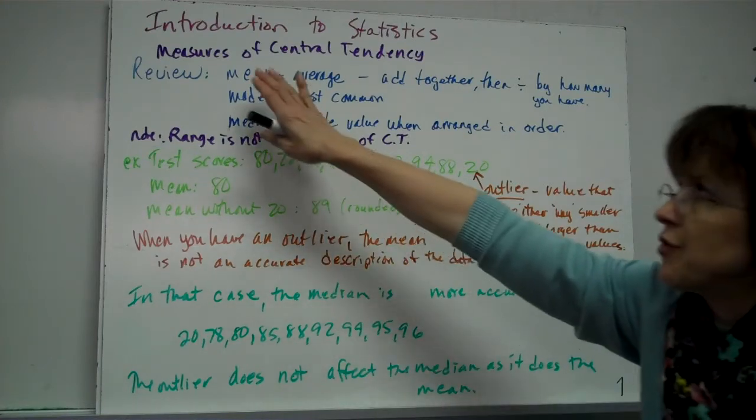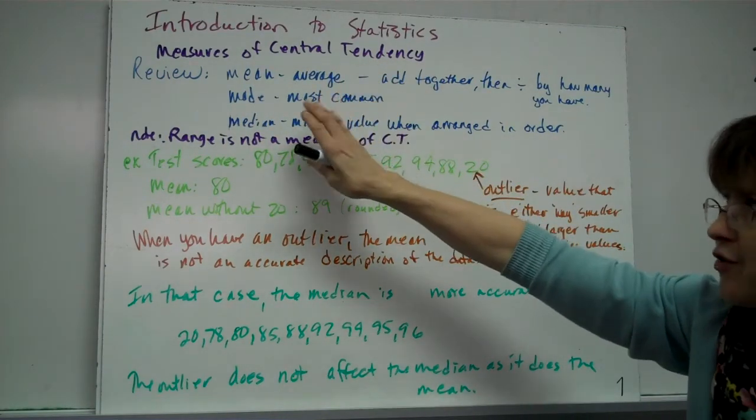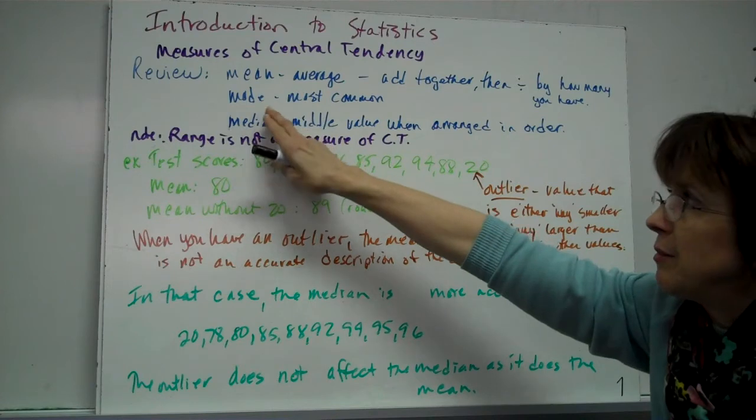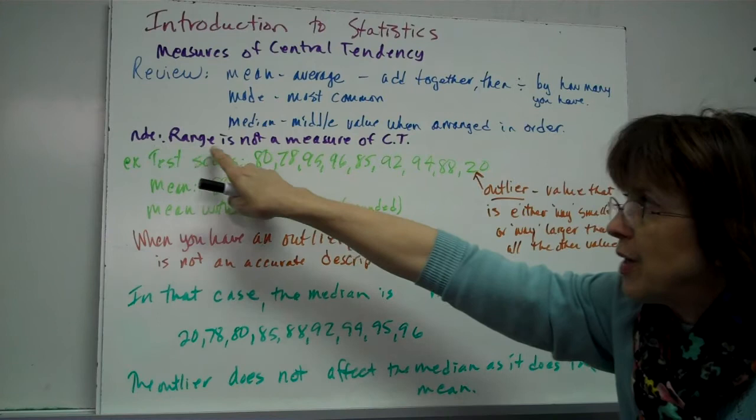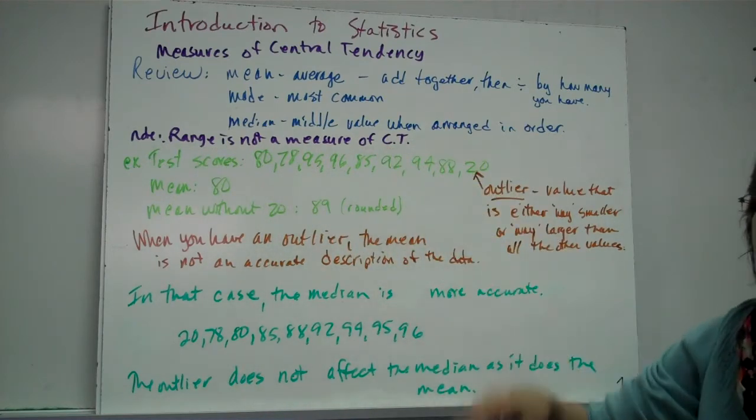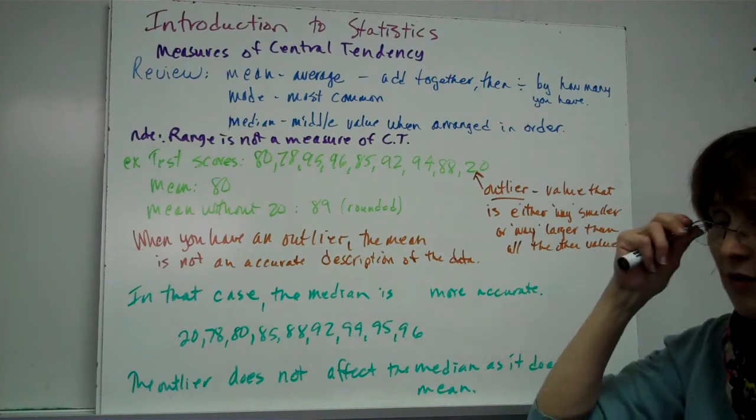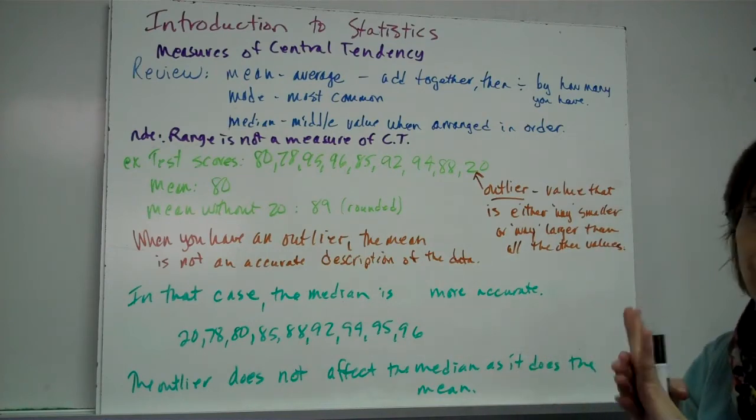So basically we're talking about measures of central tendency, which you've had before. If you don't remember that, you do remember, I'm sure, mean, mode, and median. Those are the three measures of central tendency. The range, note, the range is not a measure of central tendency. It's talked about, and it's an important part of central tendency, of the mean, mode, and median, but it's not a measure of central tendency.